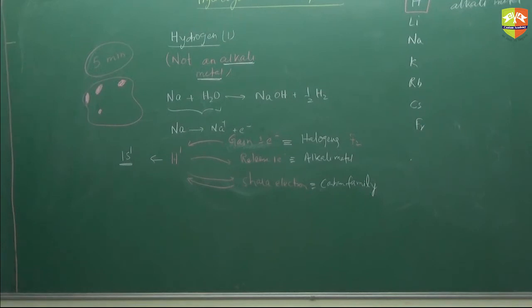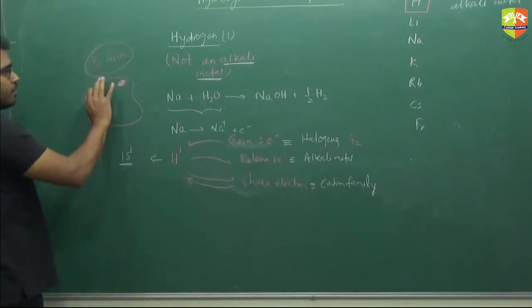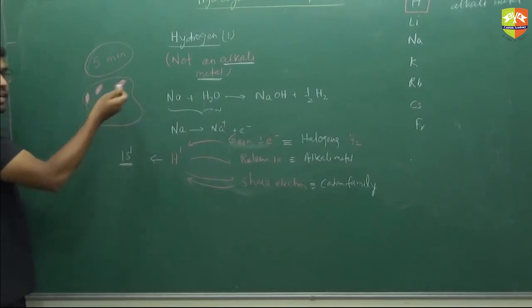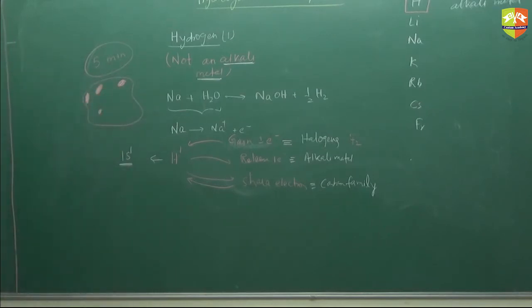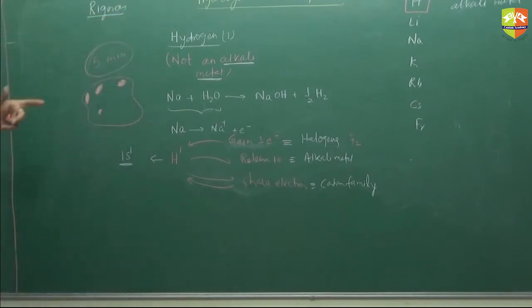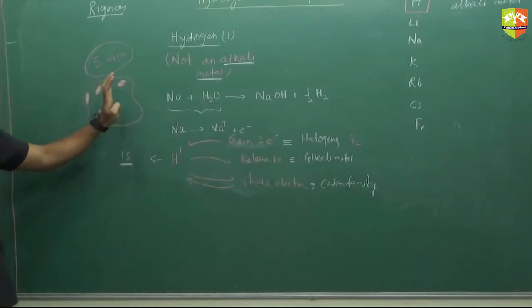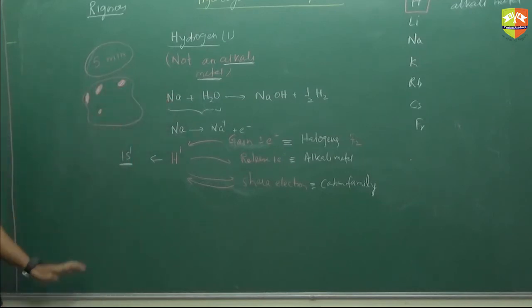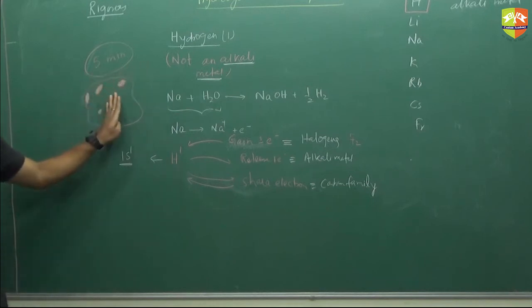Without amalgam, the reaction is also possible, but the rate is very high. The reaction is highly exothermic and vigorous — there are chances of catching fire because of the high heat evolved. To control that reaction we use amalgam, so that the reaction slows down, lesser energy evolves, and we can control it. Without the Hg alloy also, the reaction is possible — but the rate is very high.